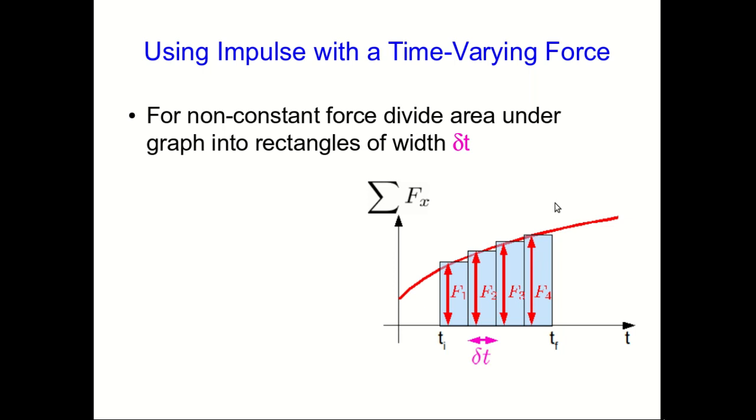So now I just make the same argument that I did in unit 3, when I was showing you how to get a change in velocity from a time varying acceleration. We just divide up the area under the x component of force graph versus time into a bunch of rectangles of some arbitrary width delta t.